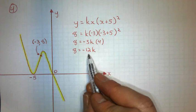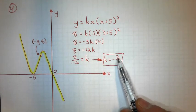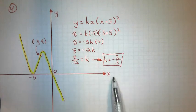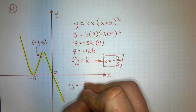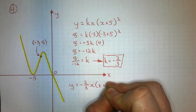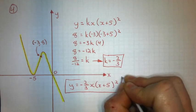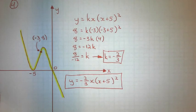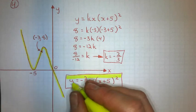Dividing by that coefficient gives a negative k value, which should be the case because the graph goes down, up, down. I plug that into my equation and I'm done. And that's how you get the equation from a cubic graph when you're given the intercepts or one other point on the curve.